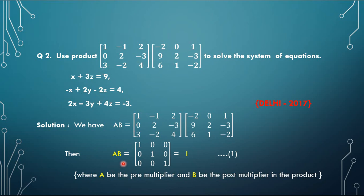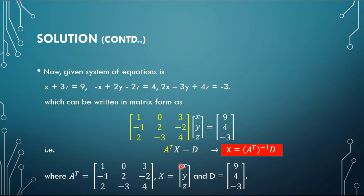Now, the given system of equations is: x plus 3z equals 9 (note: there is no y term here, so the coefficient of y is 0); next equation has coefficients minus 1, 2, minus 2; and the third has coefficients 2, minus 3, 4. So the coefficient matrix is [1, 0, 3 / minus 1, 2, minus 2 / 2, minus 3, 4]. We can write this system as AX equals B, converting it into matrix form.